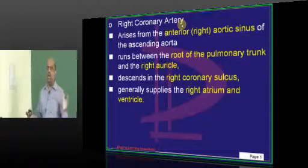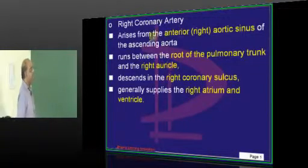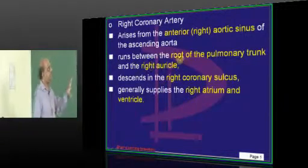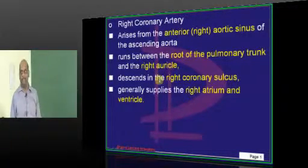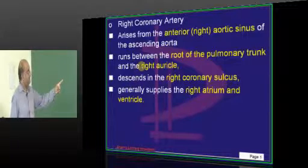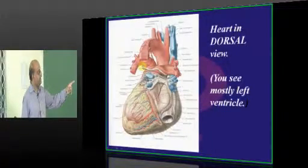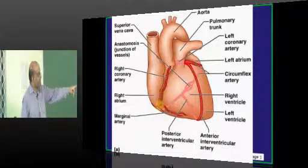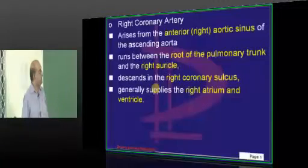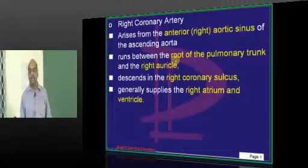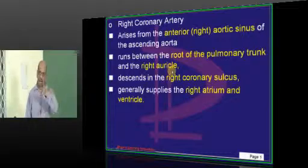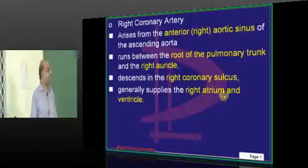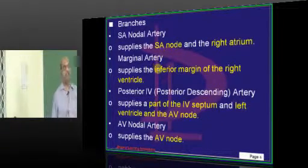Now, the right coronary artery — from where does it arise? It arises from the anterior aortic sinus of the ascending aorta. The right coronary runs between the root of the pulmonary trunk and the right auricle, then descends in the right coronary sulcus, and mainly supplies the right atrium and right ventricle.